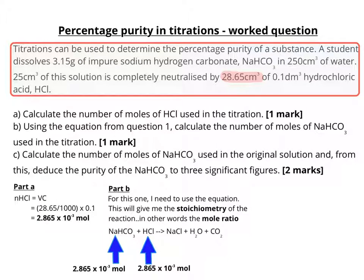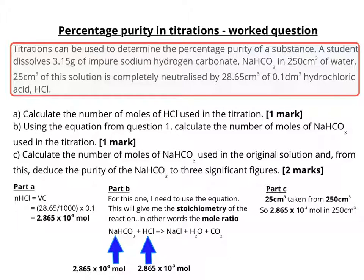Part C asks you to calculate the number of moles of NaHCO₃ in the original solution. In the titration we used 25 cm³, which contained 2.865 × 10⁻³ moles. Since 25 cm³ goes into 250 cm³ ten times, I must multiply 2.865 × 10⁻³ by 10, giving 2.865 × 10⁻² moles in the original 250 cm³ solution — that's ten times the number of moles.